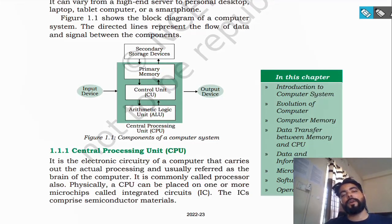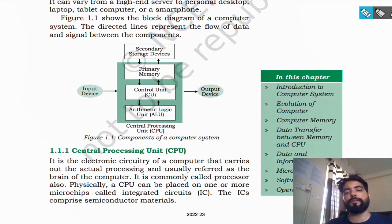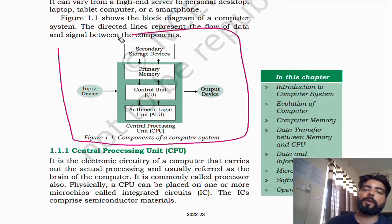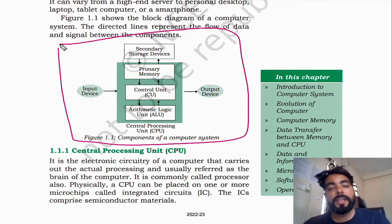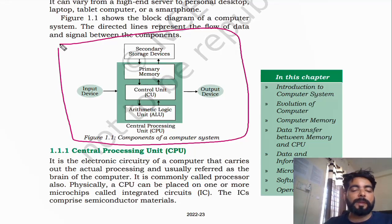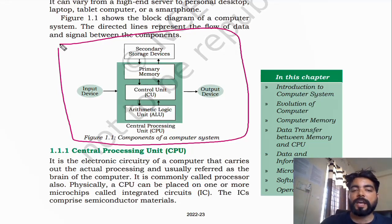Figure 1.1 shows the block diagram of a computer system. The directed lines represent the flow of data and signals between the components. Here you can see a block diagram showing different parts of the computer system, and these lines show the flow of data and control — where data is going and where control is going.